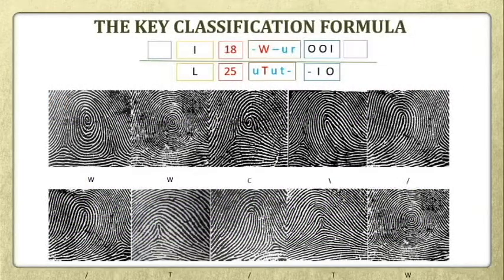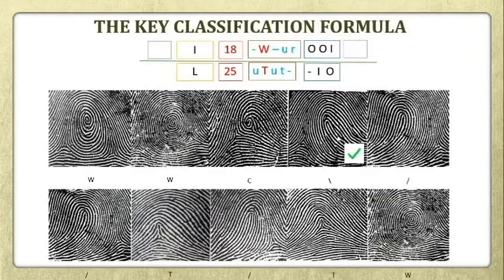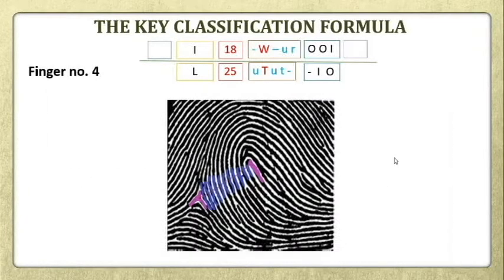In our set of fingerprints, we are going to classify finger number 4, because finger number 4 is the first loop that appeared from finger number 1 to 4 and 6 to 9, with the exemption of fingers number 5 and 10.